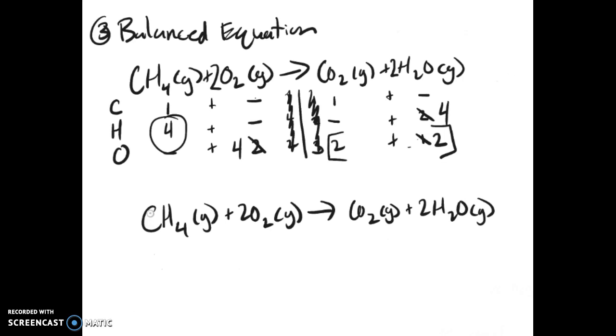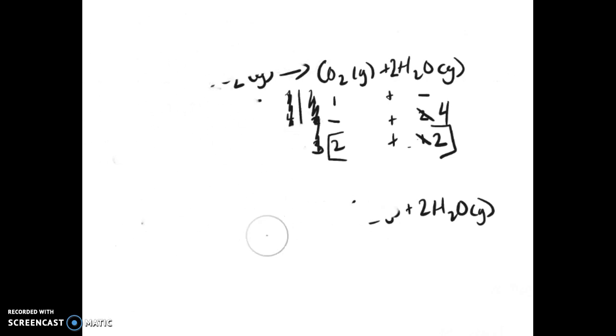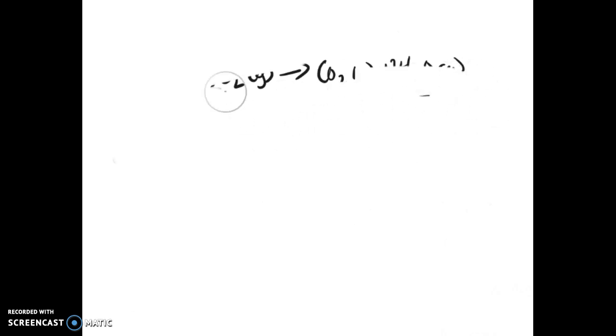Meaning, one mole of methane plus two moles of oxygen yields one mole of carbon dioxide and two moles of water. Now that we know how to write these, we need to briefly talk about the different types of chemical reactions.